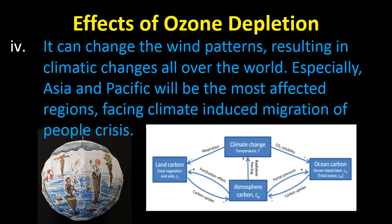Another important effect is that ozone depletion can change wind patterns, resulting in climatic changes all over the world. Especially Asia and the Pacific will be the most affected regions, facing climate-induced migration crises. These are some of the most harmful effects of ozone layer depletion.